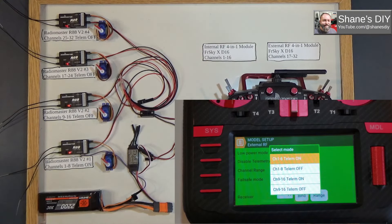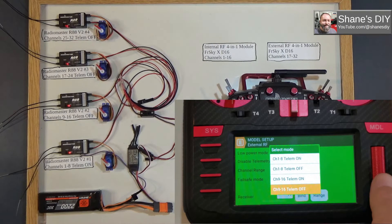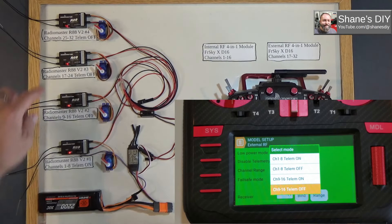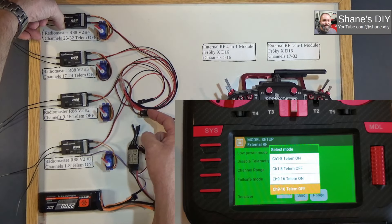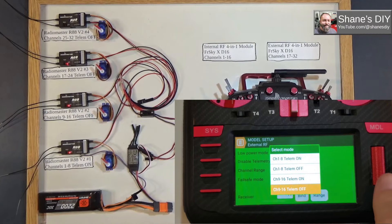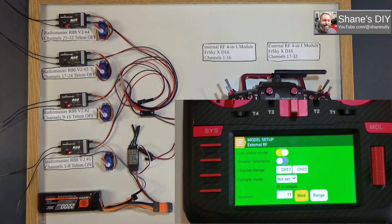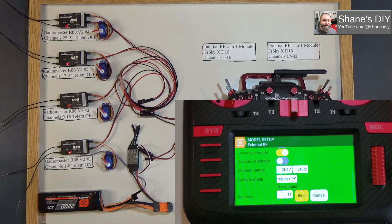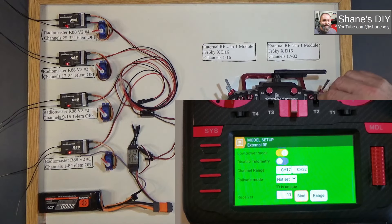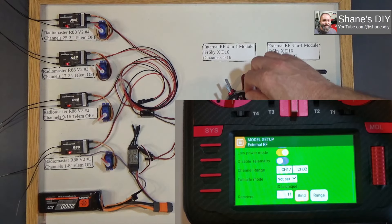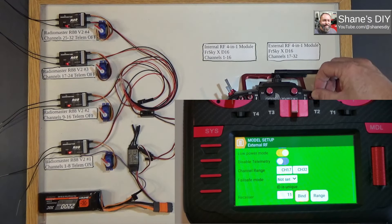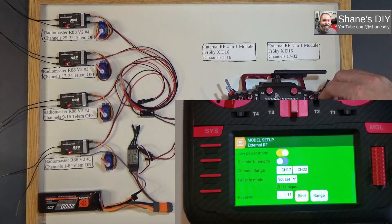We're going to do it one more time and then we'll have our fourth one. This one's going to be channel 9 to 16, telemetry off. We'll power them back off. Put this one in bind mode. Power up. And we're going to hit bind. So we're all bound back up again. Now you can see I've got control of each of these. I've got channel 8, channel 16, channel 24 here, and channel 32.